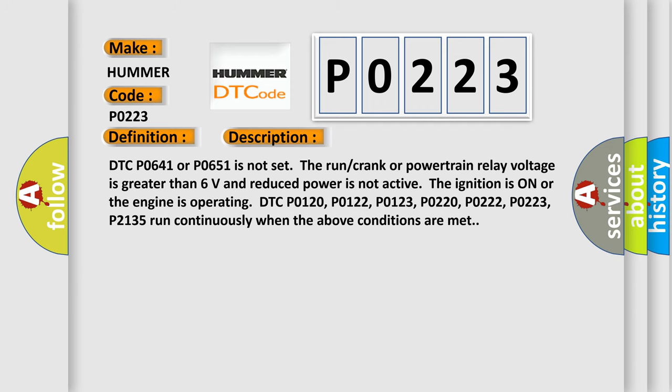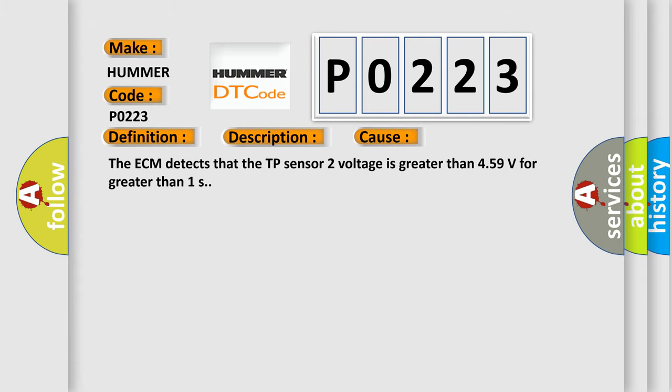Here is a short description of this DTC code. DTC P0641 or P0651 is not set. The run/crank or powertrain relay voltage is greater than 6 volts and reduced power is not active. The ignition is on or the engine is operating. DTC P0120, P0122, P0123, P0220, P0222, P0223, P02135 run continuously when the above conditions are met. This diagnostic error occurs most often when the ECM detects that the TP sensor 2 voltage is greater than 4.59 volts for greater than 1 second.